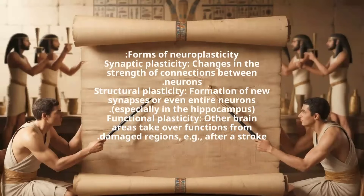Forms of neuroplasticity: Synaptic plasticity — changes in the strength of connections between neurons. Structural plasticity — the formation of new synapses or even entire neurons, especially in the hippocampus. Functional plasticity — where other brain areas take over functions from damaged regions, e.g., after a stroke.